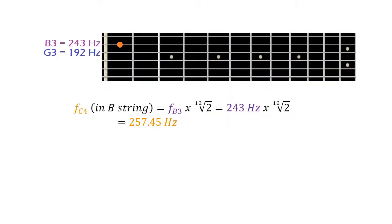For example, C4 is found in the first fret of the second string, so you multiply its open string frequency in Vertus Tuning by the 12th root of 2 once, and you obtain 257.45 Hz.